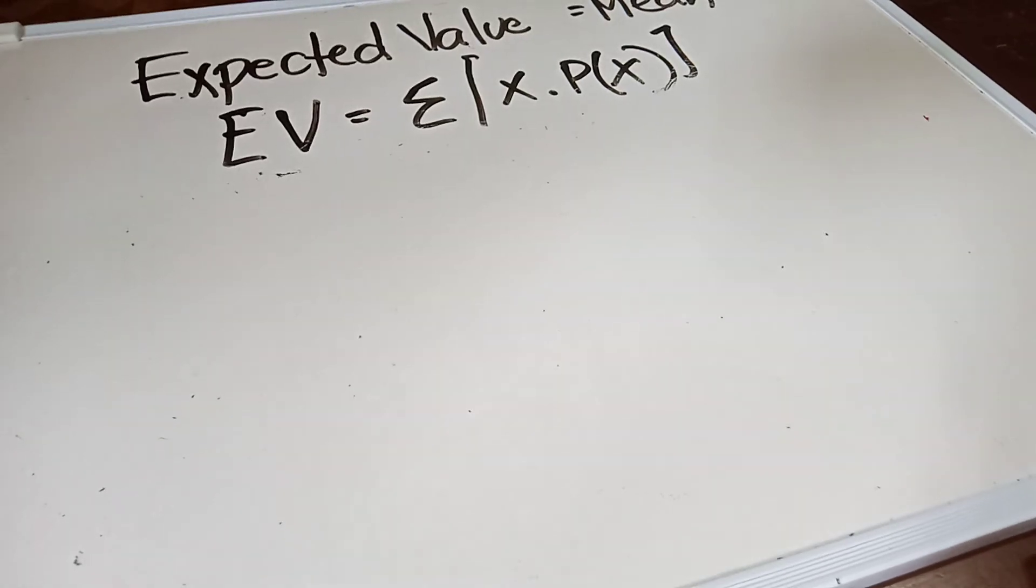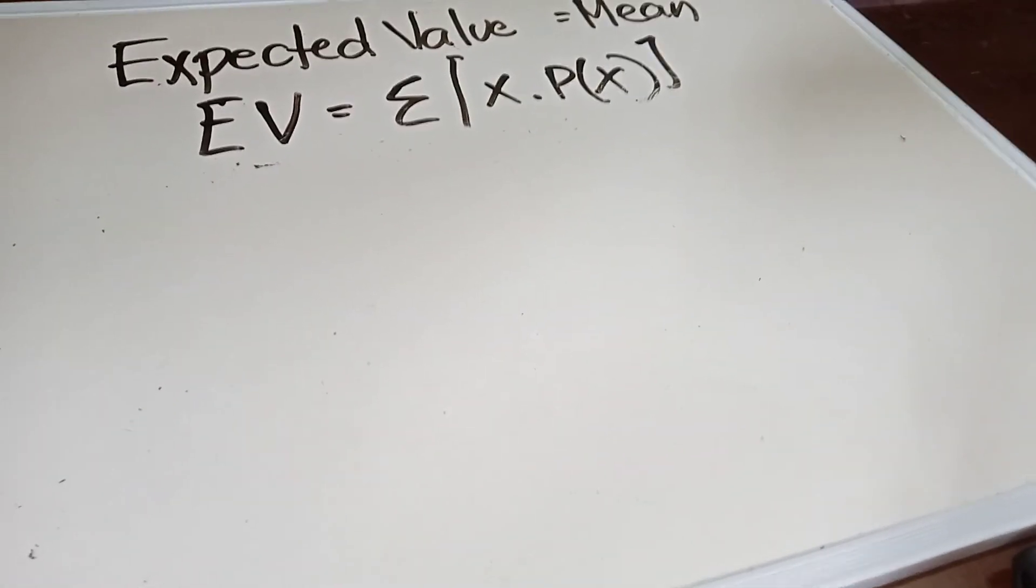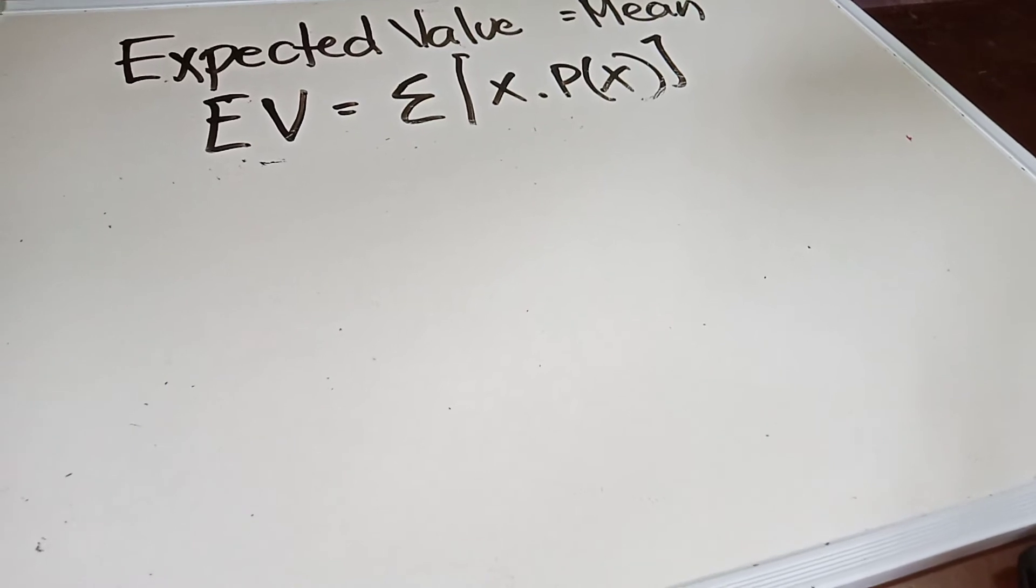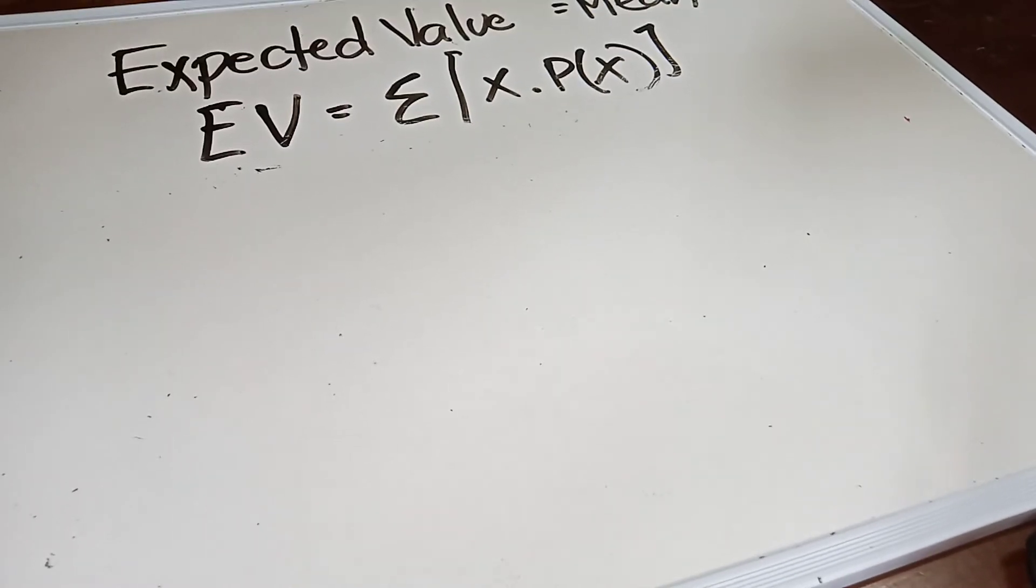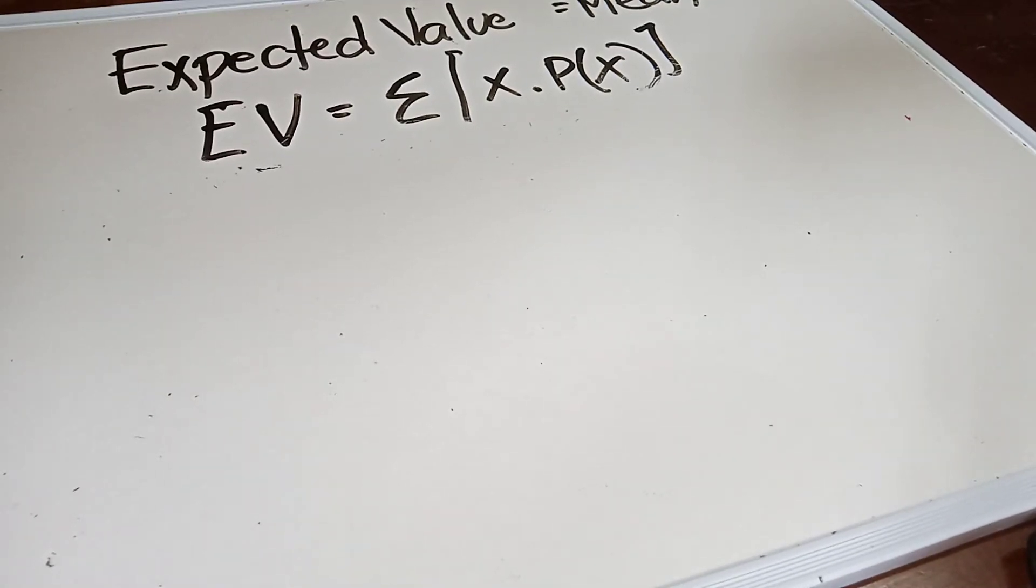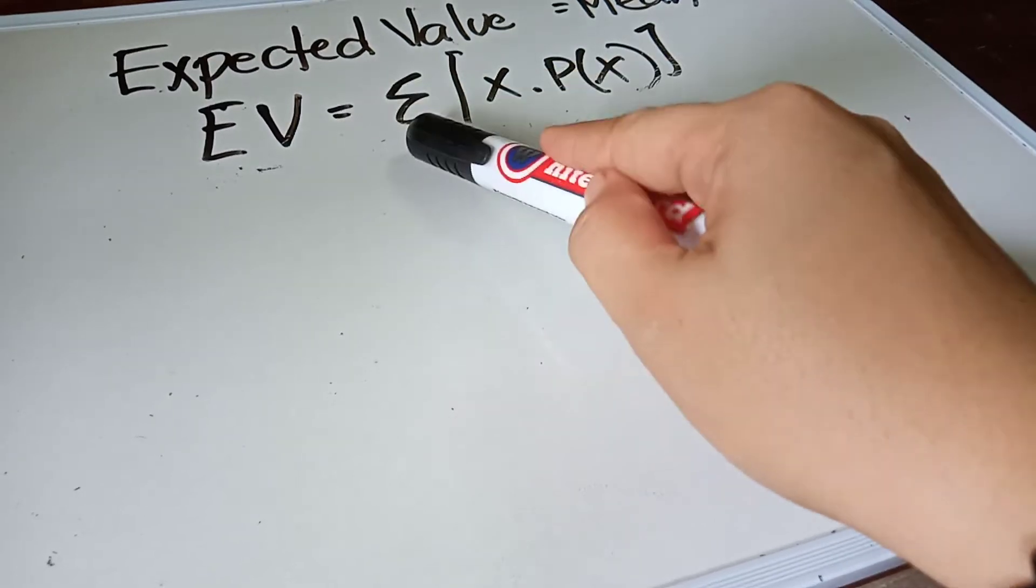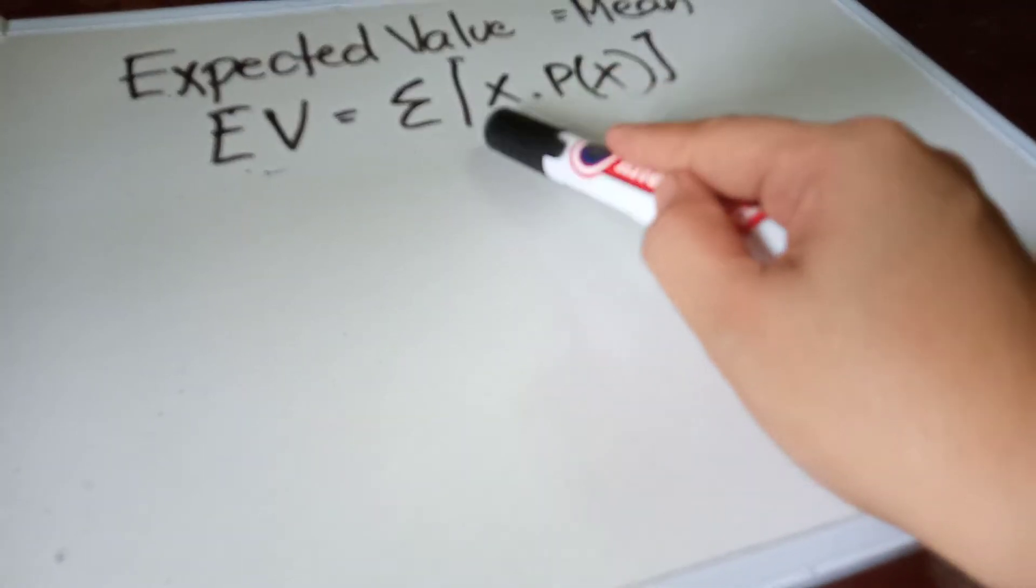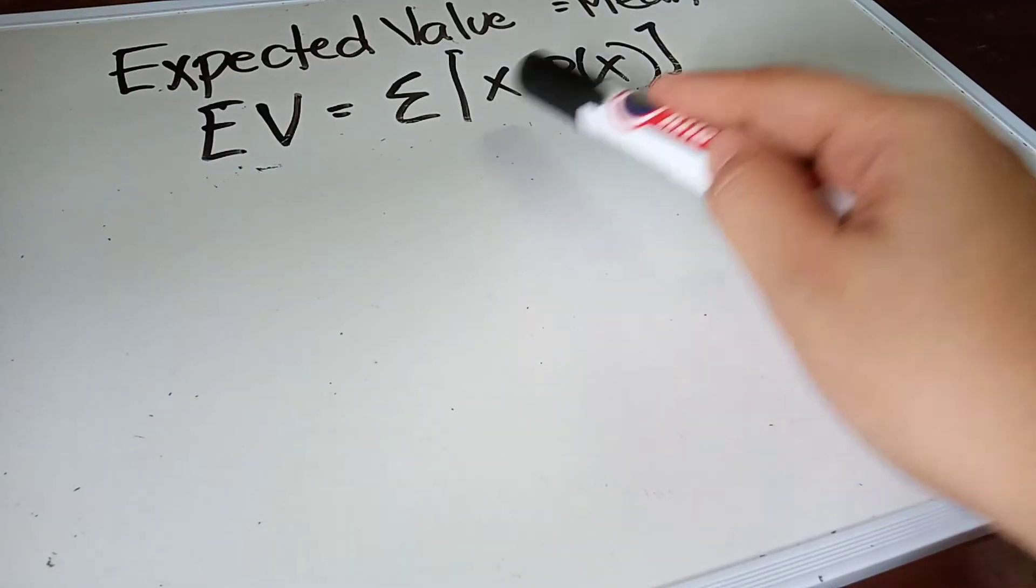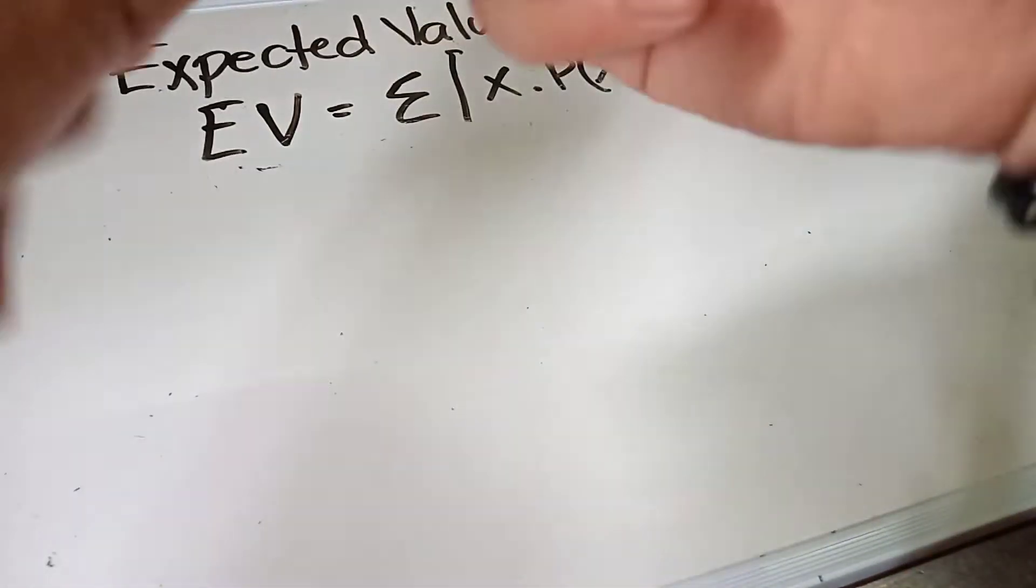Okay my dear friends, we will discuss about the expected value or the mean. We know that expected value has a sign of EV, which is the summation of all x and the probability.